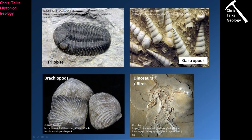Here we have four examples of body fossils: a trilobite, some gastropods (sea snails), some brachiopods, and Archaeopteryx — one of the intermediate phases between birds and dinosaurs. In all four cases we have the whole body — the shell, the shell, the shell, and the skeleton. We also actually have trace fossils here — the traces of the feathers associated with Archaeopteryx as well.